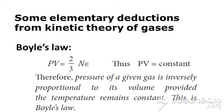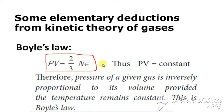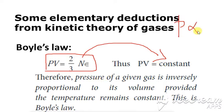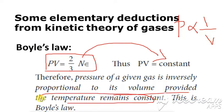Next, we are going to see some elementary deductions from the kinetic theory of gas. From kinetic theory, what has been derived first is Boyle's law. This Boyle's law, we know already, which is given by PV = 2/3 × NE. These are all considered to be constant, so we can write PV = constant. The pressure of a gas is inversely proportional to its volume provided the temperature remains constant. This is Boyle's law.